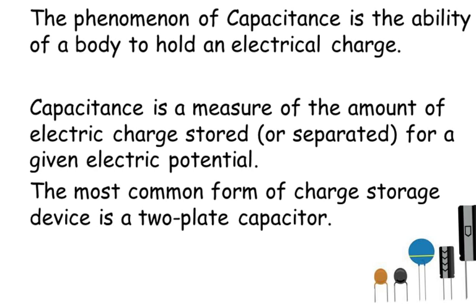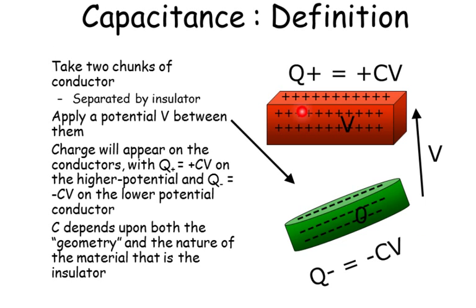The most common form of charge storage device is a two-plate capacitor. If you take two chunks of a conductor and you separate them with an insulator, apply a voltage between them, you'll get charges forming on the conductors. Now the capacitance of the capacitor that you've made here depends on the geometry and the nature of the material of the insulator between the two conductors as well.